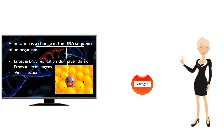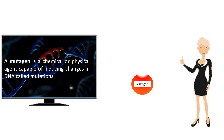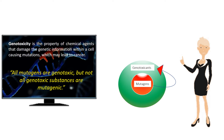A mutagen is a chemical or physical agent capable of inducing changes in DNA called mutations. Genotoxicity is the property of chemical agents that damage the genetic information within a cell, causing mutations which may lead to cancer. All mutagens are genotoxic, but not all genotoxic substances are mutagenic.